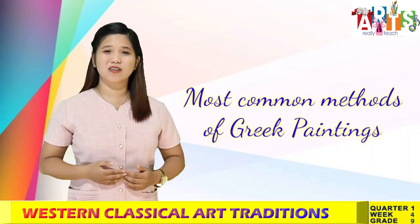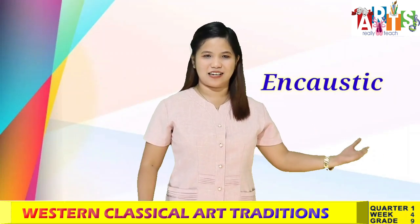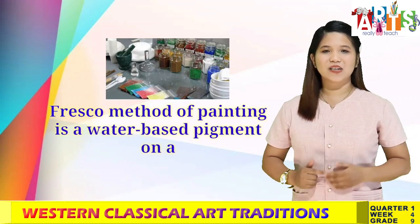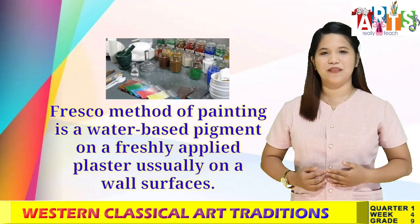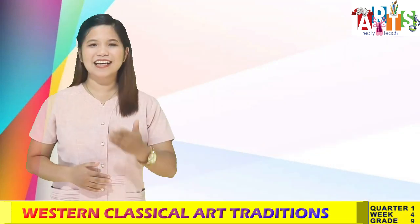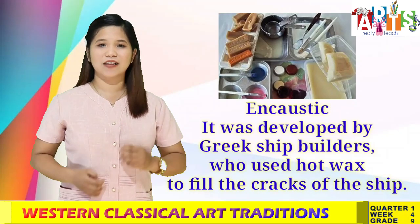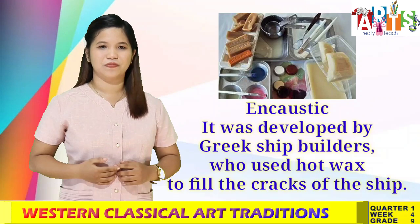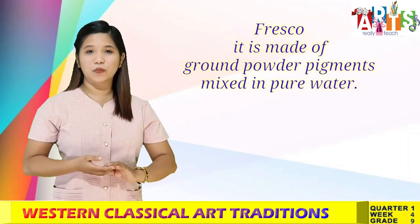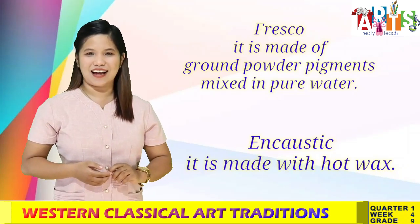The most common method of Greek paintings is the Fresco method — water-based pigment applied on freshly laid plaster, usually on wall surfaces. Next is Encaustic, developed by Greek shipbuilders who used hot wax to fill the cracks of ships. To summarize: Fresco is made of ground powder pigments mixed in pure water, while Encaustic is made with hot wax.